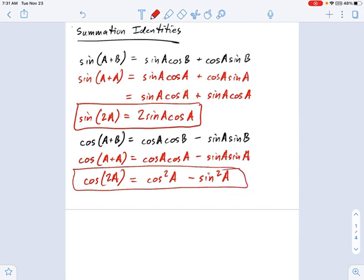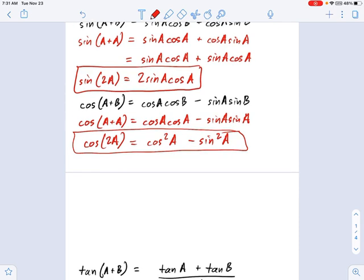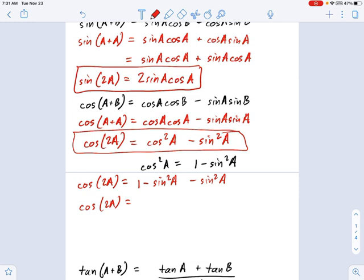But there are several different versions of this one. So I want you to be comfortable with all three of them. If you remember the Pythagorean identity, what is cosine squared equal to? Cosine squared of A is equal to 1 minus sine squared of A. So now I can rewrite the identity above as cosine of 2A equals 1 minus sine squared A minus sine squared A. And that means cosine of 2A is equal to 1 minus 2 sine squared A. And that is the second important form of the double angle identity for cosines.